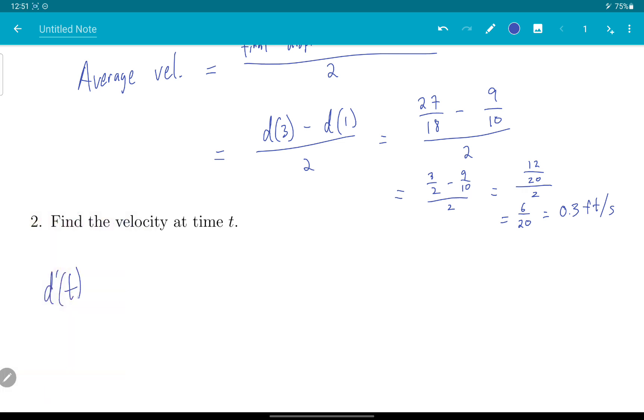Which is the derivative of 9T over 9 plus T squared. We use our quotient rule. I'm going to call numerator F, denominator G. So I got G times F prime minus F times G prime, all over G squared.